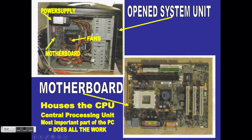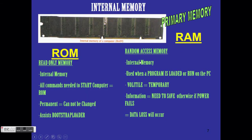Looking at internal memory: the internal memory is fitted into the motherboard and is also programmed on it. We have two types of internal memory — ROM and RAM — and these are both primary memory.